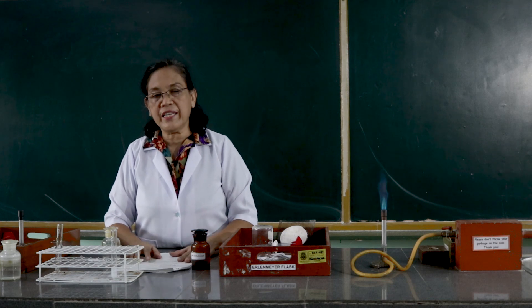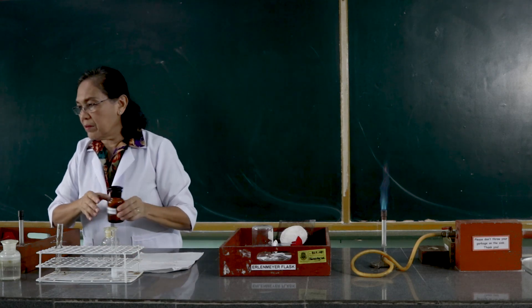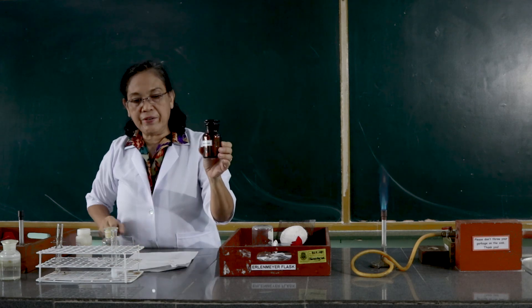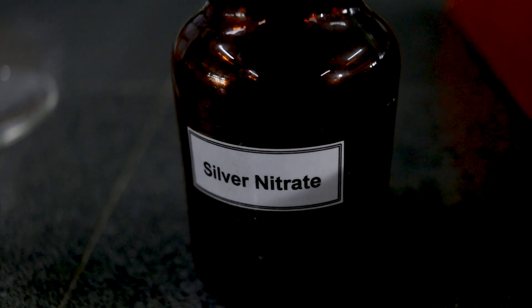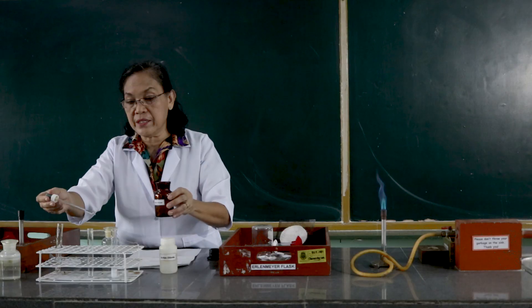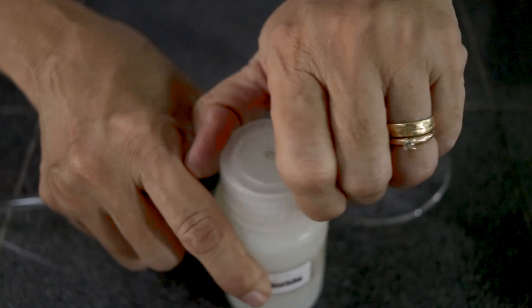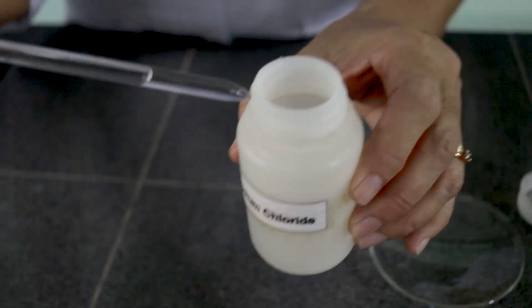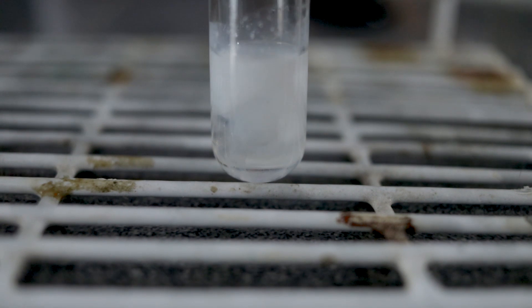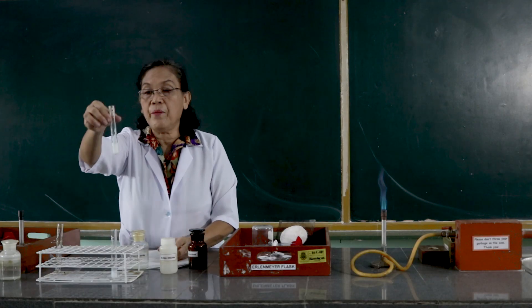Another chemical reaction exhibiting double decomposition is that between silver nitrate and sodium chloride. This is the silver nitrate solution and this is the sodium chloride solution. We will use 3 ml of the silver nitrate and add 3 ml of the sodium chloride solution. I want you to observe what happens.